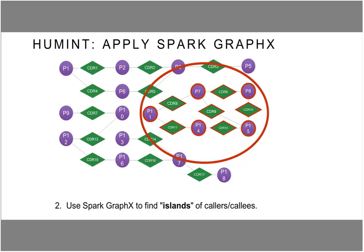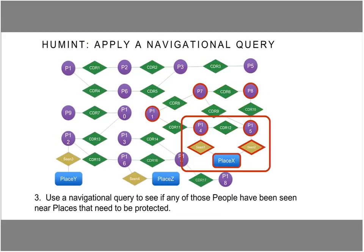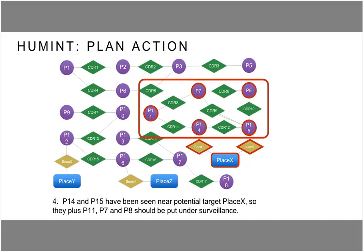Once you've found an island, you can start looking at it more closely. We look at the people in here and see whether any of them have been sighted near any places that need to be protected. Sure enough, there are two people — P14 and P15 — who have been seen near place X, which is something of great interest to us. At that point, we can decide they're of interest, and because they're in this clique, all five people in that clique need to be carefully looked at as well. This could be quite innocent, obviously, but in reality we want to turn the focus on these people and look more closely at what they're doing.